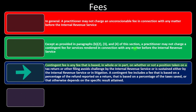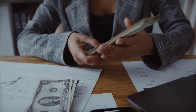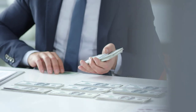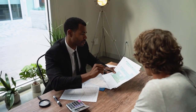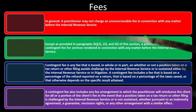A contingent fee is any fee that is based in whole or in part on whether or not a position taken on a tax return or other filing avoids challenge by the IRS or is sustained either by the IRS or in litigation. The contingent fee includes a fee based on a percentage of the refund reported on a return, a percentage of taxes saved, or that otherwise depends on the specific result attained. A contingent fee also includes any fee arrangement in which the practitioner will reimburse the client for all or a portion of the client's fee in the event that a position taken on a tax return is challenged by the IRS or is not sustained, whether pursuant to an indemnity agreement, a guarantee, recession rights, or any other arrangement with similar effect.